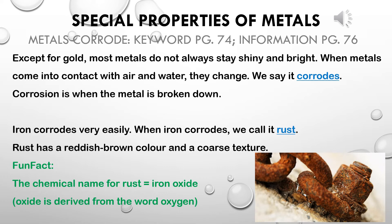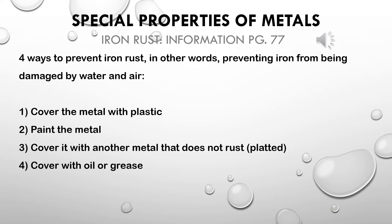To revise: the first property is that metals conduct heat; the second is that some metals are magnetic; and the third is that some metals corrode. On the bottom of page 76, you will see that there are four ways to prevent metals from rusting.